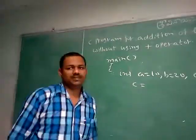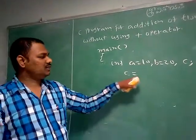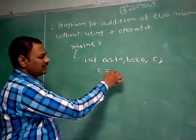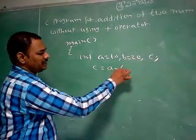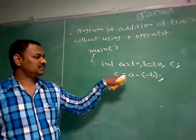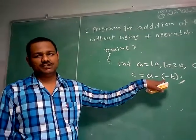So in general, addition of two numbers means we write C equals A plus B. Instead of writing C equals A plus B, I can write A minus minus B. So there is no plus operator. This is the first solution.